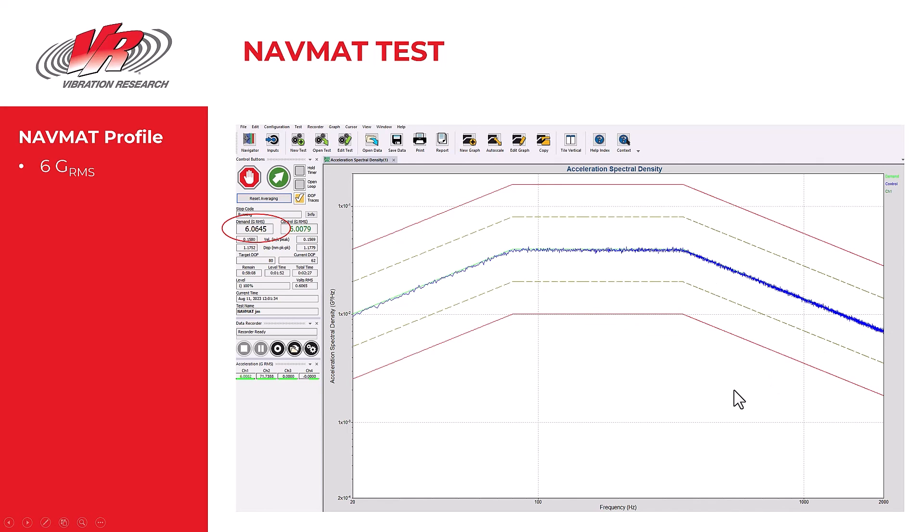So hopefully this has helped you understand that there are different units in the vibration industry: G-peak, peak-to-peak values, RMS, G-squared per hertz, and the difference between them and how you might find them and why they're important.